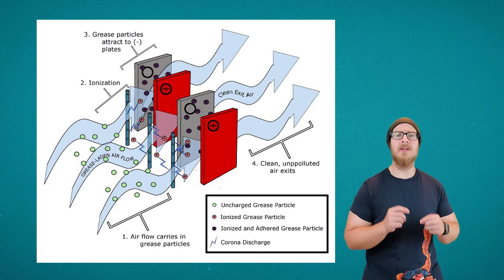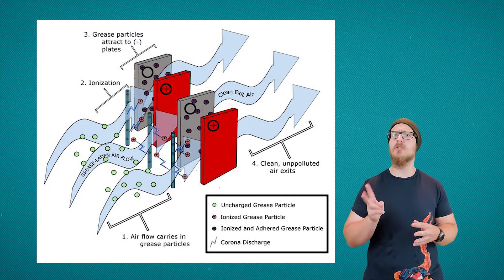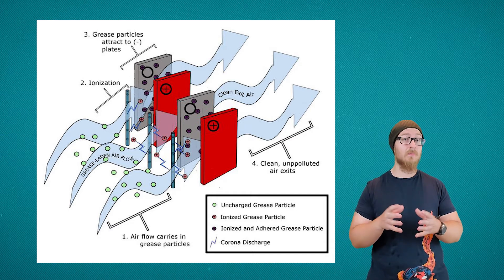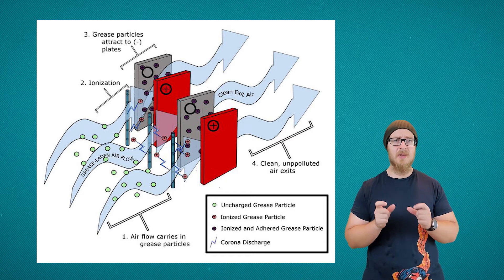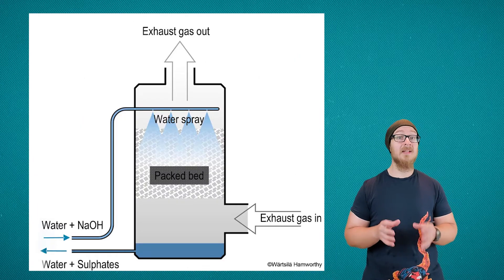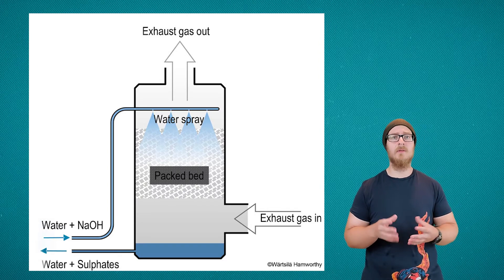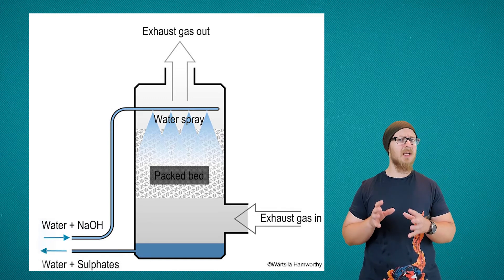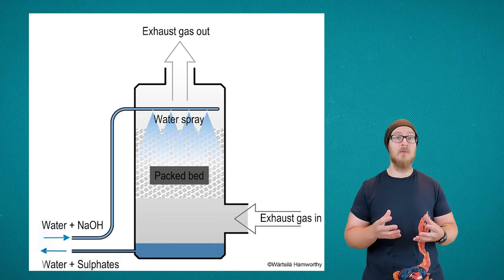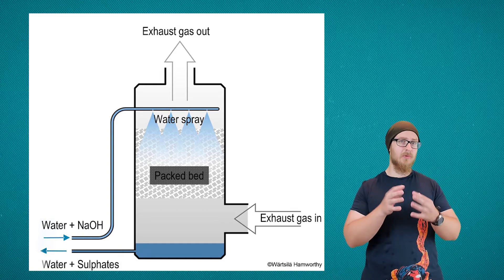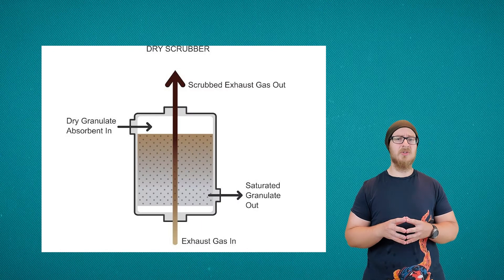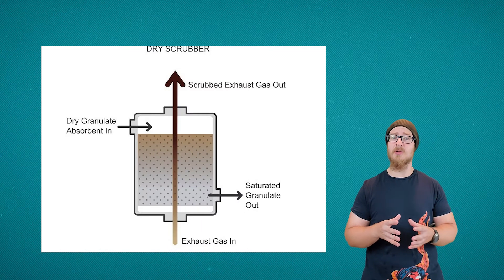Gases released from power plants are also treated to reduce their impact. An electrostatic precipitator takes advantage of the negative charge on many air particulates — they contain positively charged metals inside which attract the particles, stopping them from being discharged. Wet scrubbers work by spraying outgoing gases with water and a few other chemicals. Since sulfur dioxide and nitrogen oxides react with water, this reduces the amount of those pollutants released. The wastewater is captured and disposed of.